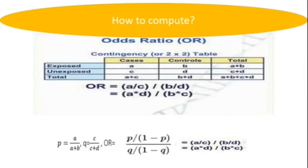We have two groups: the exposed group and the unexposed group. We also have a group of affected individuals called cases, and a group of controls — persons who don't have the disease. With this contingency table showing the relationship between occurrence of the disease and our factor, the exposed or unexposed group can represent male and female persons or any other variable expressing dependence between two variables.